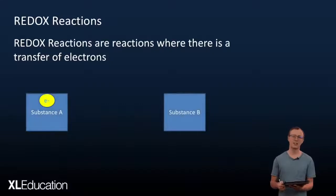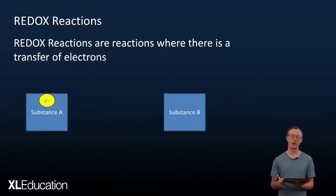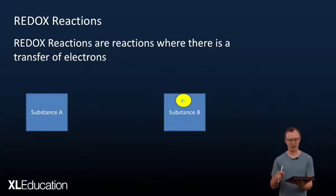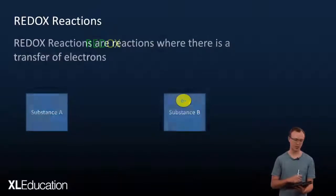Hi, my name is Heinrich. Today we're going to talk about redox reactions. Redox reactions are reactions where there is a transfer of electrons from one substance to the other. You have a substance A which might have a surplus of electrons or might be neutrally charged, but some of its electrons get transferred to substance B. So substance A loses some electrons and substance B gains some electrons.